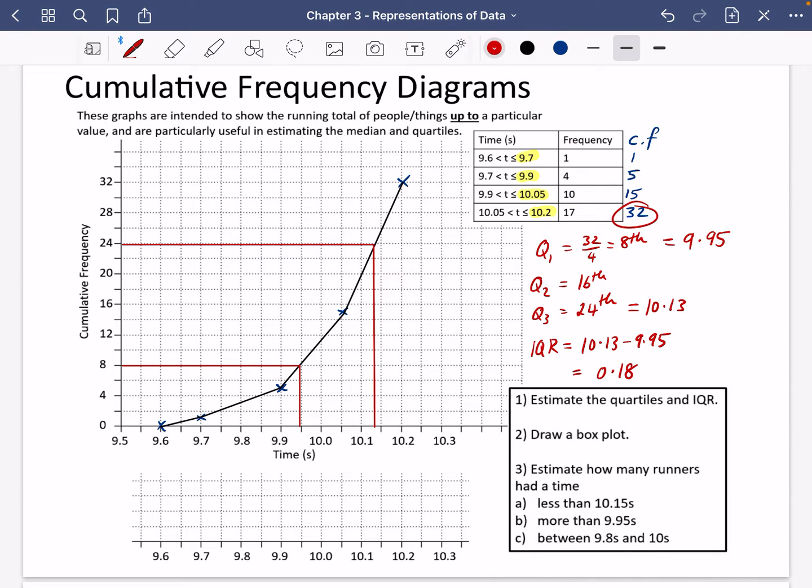The second thing it wants us to do is to draw a box plot. Now, the best thing about these is that I've actually got exactly the same scale drawn underneath here, and it just means these lines can come straight down and they can go into those particular sections of the box plots. But I have got one of them that I haven't quite found out yet, which was the median.